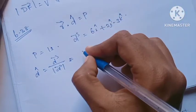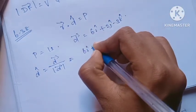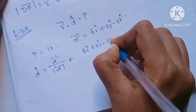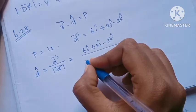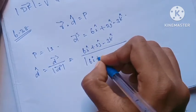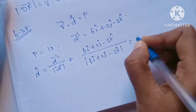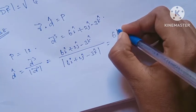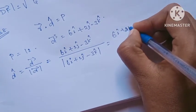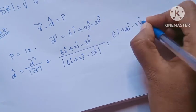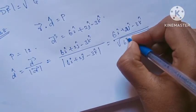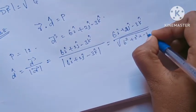D-vector is 6i+2j-3k divided by modulus of 6i+2j-3k. This equals root of 6 squared plus 2 squared plus 3 squared.